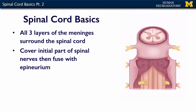The spinal cord is part of the central nervous system, and like the brain, the spinal cord is covered with all three meningeal layers. This includes the dura on the outside, the arachnoid as the next layer in, and then the pia mater, which is just up against the spinal cord and very difficult to peel off. So all three of these layers exist, and we have a subarachnoid space around the spinal cord, just like we did around the brain.